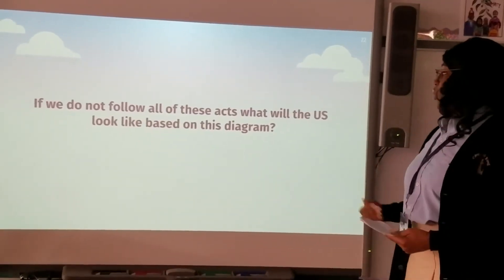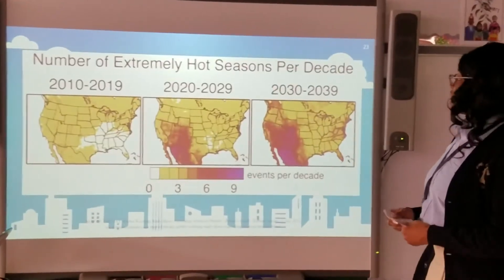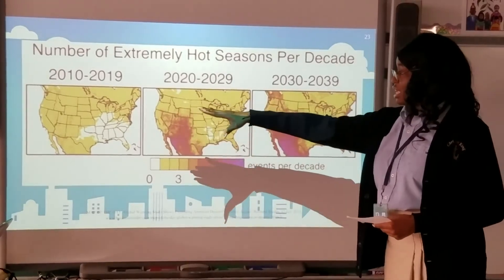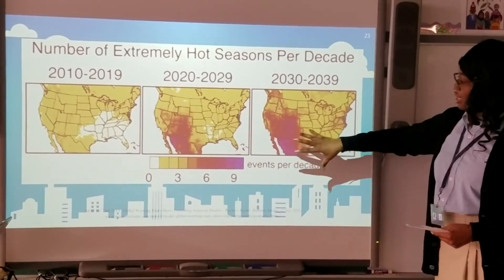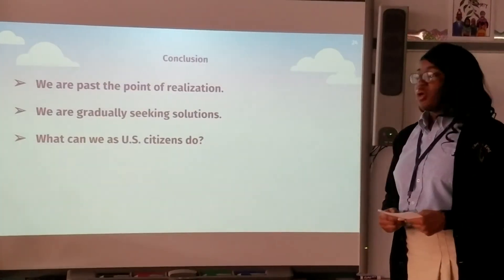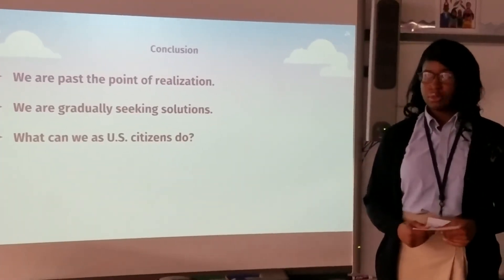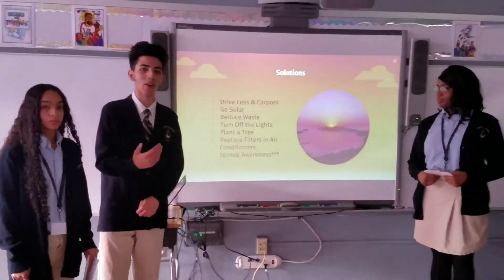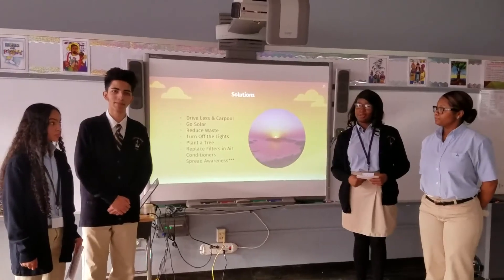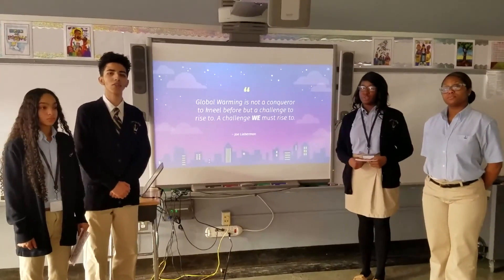If we do not follow these acts, what will the United States look like? This diagram shows the number of extremely hot seasons per decade. It shows what the United States looked like in 2010 and what it will look like in 2039 — Southwestern and Central America will be greatly affected. We are past the point of realization and are gradually seeking solutions. What can we as U.S. citizens do? We can drive less, carpool, go solar, reduce waste, turn off lights, plant trees, replace air conditioner filters, and most importantly, spread awareness. Global warming is not a conqueror to fear, but a challenge we must rise to.